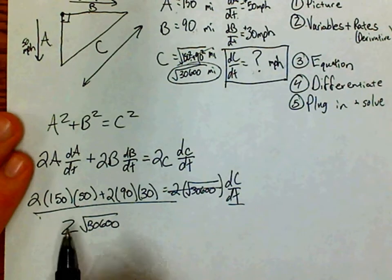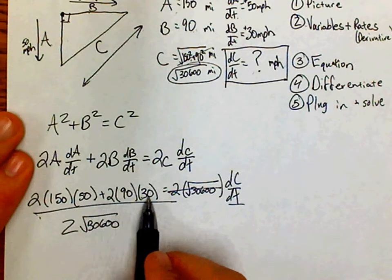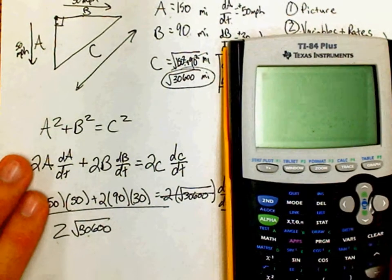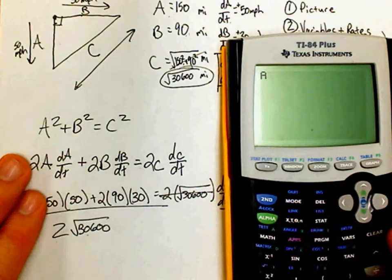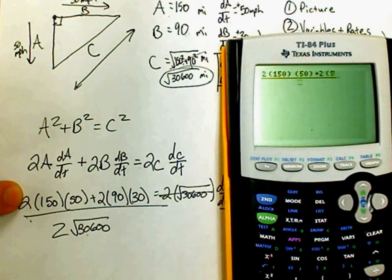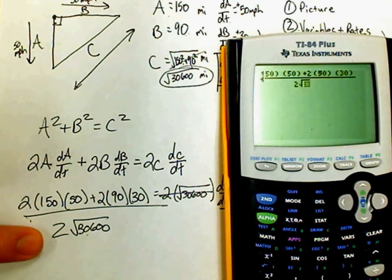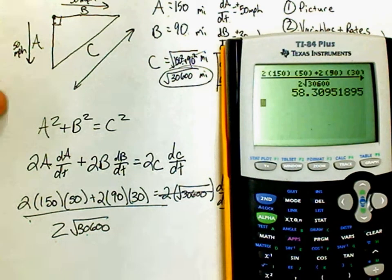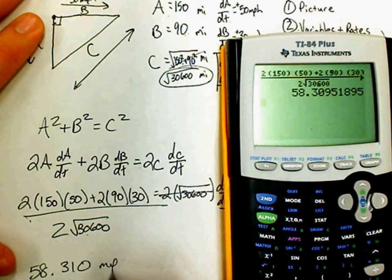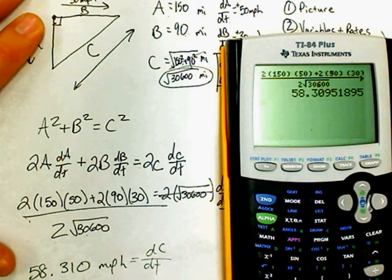So dc/dt equals [2(150)(50) + 2(90)(30)] / [2√30,600]. Let's put that into the calculator. Using a TI-84 with the fraction function: 2 × 150 × 50 + 2 × 90 × 30, divided by 2 times the square root of 30,600. That gives approximately 58.310 miles per hour.